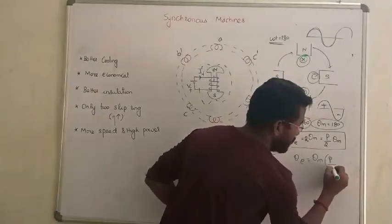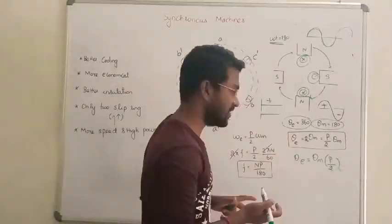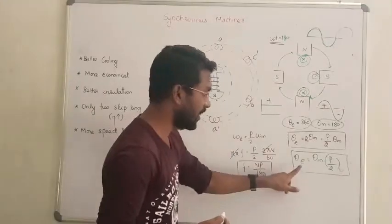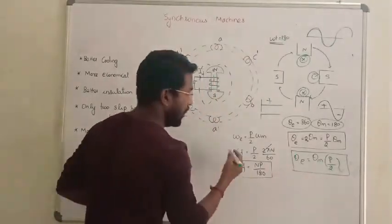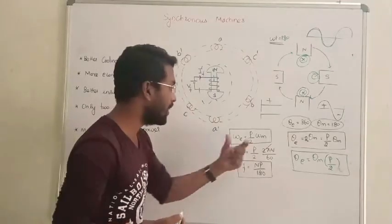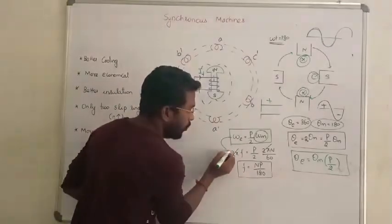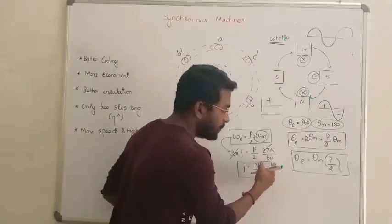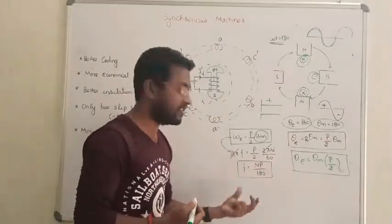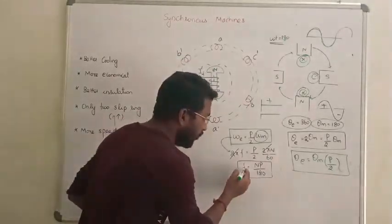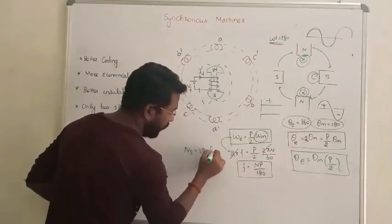From this, we can write the relationship as: electrical degree = mechanical degree × P/2. So theta-E equals theta-M times P by 2. Differentiating, omega-E equals P by 2 times omega-M, where omega-M is mechanical speed and omega-E is electrical speed. Since omega-E equals 2-pi-F and omega-M equals 2-pi times N over 60, after simplification, we get the synchronous speed formula: N equals 120F divided by P.